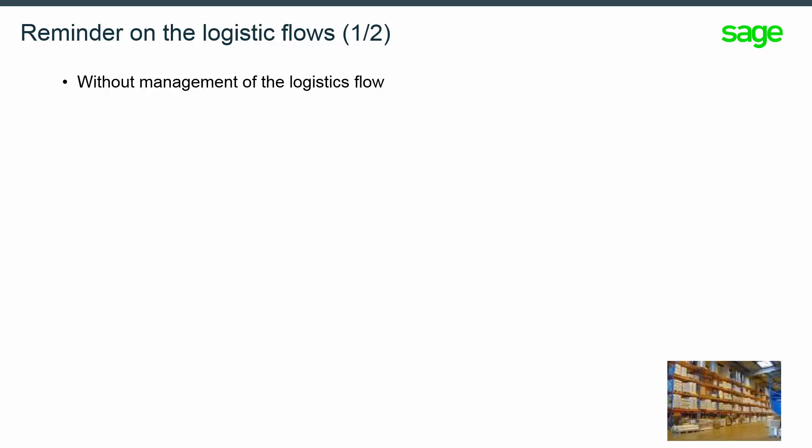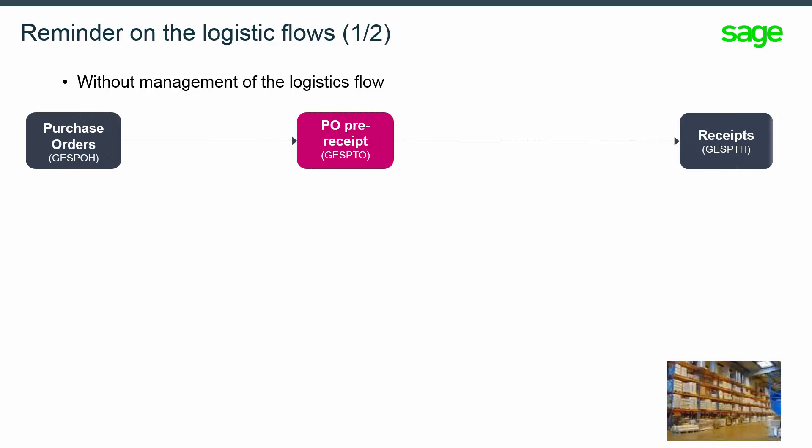Let's first review the transportation process available in Sage X3. Here's an example of a storekeeper who receives merchandise. He could do a pre-receipt for a set of multi-sites and multi-orders at the same time in order to update the expected quantities and receipt date. This can be done at different times between the PO creation and the supplier receipt creation depending on the customer's organizational setup.